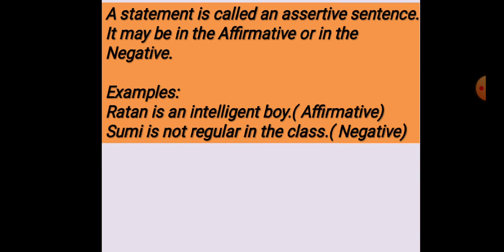A statement is called an assertive sentence. It may be in the affirmative or in the negative. You see the examples: 'Raton is an intelligent boy' — this is an example of affirmative sentence. 'Shumi is not regular in the class' — this is an example of negative sentence.